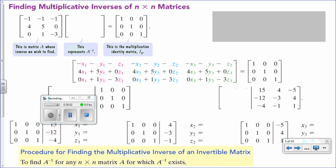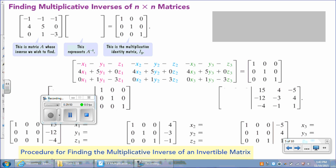Now the fun part — the inverse of a 3 by 3. For a 3 by 3, instead of W, X, Y, Z we use X1, Y1, Z1 for the first column; X2, Y2, Z2 for the second; and X3, Y3, Z3 for the third. If we were to create systems by multiplying rows times columns, we'd get three systems. The approach is to form an augmented matrix with the original matrix on the left and the identity matrix on the right, then perform row operations.